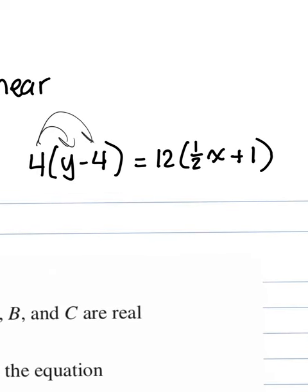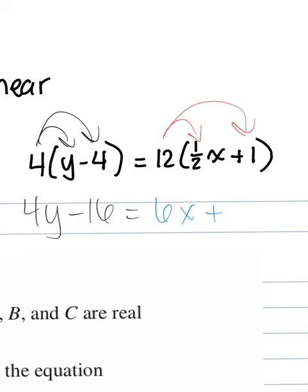When you distribute the 4, you get 4y minus 8... 16. When we distribute the 12, you get 6x plus 12. Why does 12 times a half give you 6? Because half of 12 is 6. You're taking that 12 and dividing it by 2.